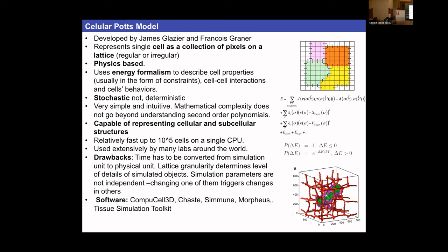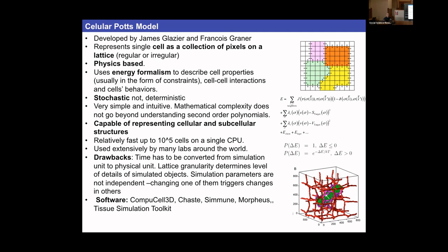The key idea behind the Potts model is energy formalism: we describe all interactions between cells in terms of energy. Just as in physics you can use forces or energies to create equivalent descriptions of a dynamical problem, here we use energy formalism to describe forces between cells. The framework is stochastic — the Cellular Potts Model is not deterministic.